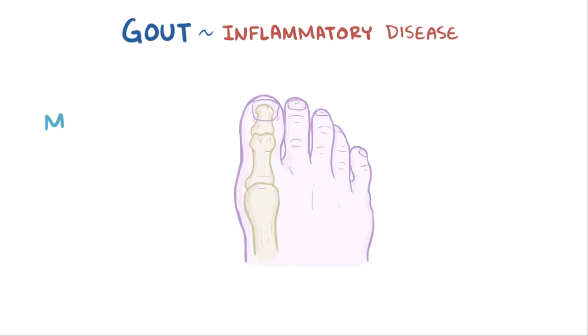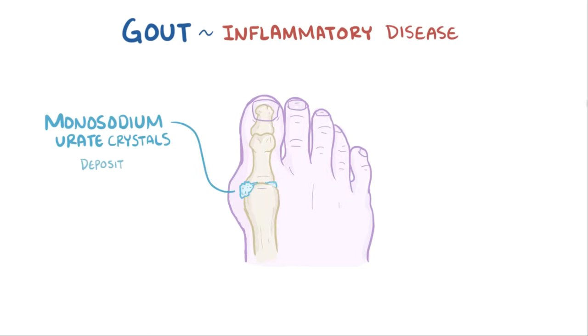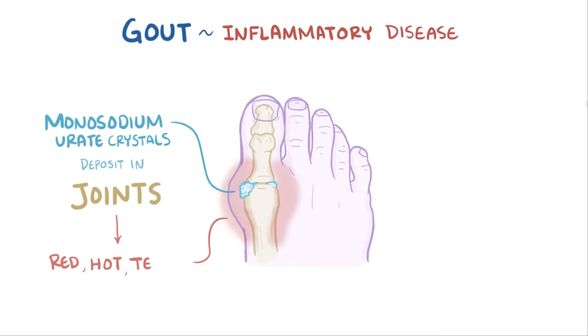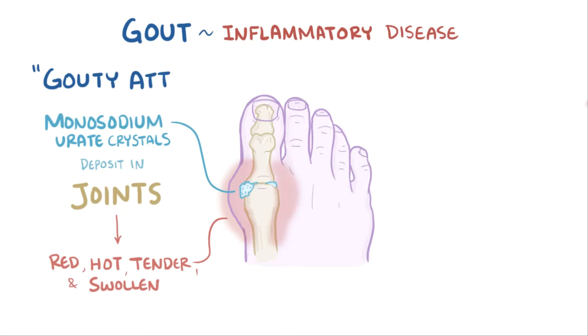Gout is an inflammatory disease in which monosodium urate crystals deposit into a joint, making it red, hot, tender, and swollen within hours. When this happens, it's called a gouty attack.